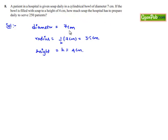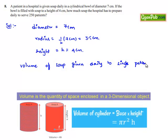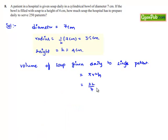He asks how much soup the hospital has to prepare daily to serve 250 patients. Let us initially calculate the volume of soup given daily to a single patient. That is volume of cylinder πr²h which is equal to π value 22 by 7, and the radius is 3.5 cm into the height is 4 cm. Here, 7 goes into 3.5 0.5 times and 22 times 0.5 is 11 and 11 times 3.5 is 38.5 and 38.5 times 4 is 154. That is 154 cm³ of soup is supplied to the patient every day.